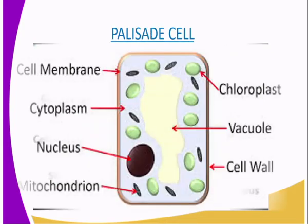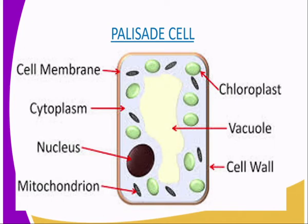Our third specialized plant cell is the palisade cell. As you can see, it has several organelles: the cell membrane, the cytoplasm, the nucleus, the mitochondria — in plural, mitochondria — chloroplasts, which are responsible for making the chlorophyll, the vacuole, and the cell wall.